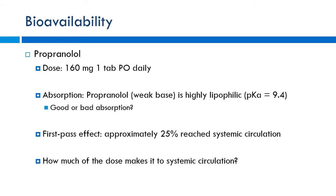You also have to consider not only how well it gets absorbed across those membranes, but additionally how much of it is going to be hit by the liver — the first pass effect. What percentage of it is going to be eaten up by the liver before it gets into the systemic circulation? In this case, let's say approximately 25% reaches the systemic circulation. So of the original dose of 160 milligrams, how much actually made it to the system? 25% of 160 is 40 milligrams. So the bioavailability at that point is only 25%. It's important because if I give 160 milligrams IV, how much is bioavailable? 160 milligrams. So 160 milligrams IV and 160 milligrams PO is not an equivalent dose — you have to take that into account. Maybe 40 milligrams of IV propranolol would be equal to 160 milligrams PO.